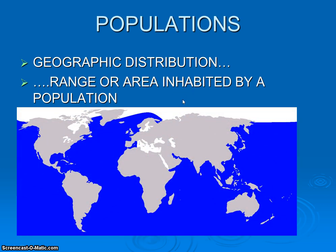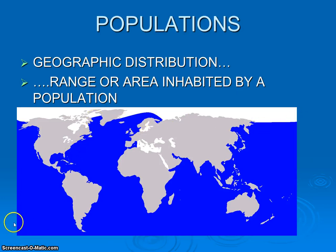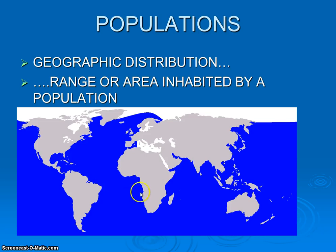Here's a range map of, let's say, some type of species of amazing whale. The blue shading shows its worldwide distribution. We don't find them in the Mediterranean, but pretty much everywhere else — so it's pretty widespread. This would be a very large geographic distribution, and that's one way we can describe a population.